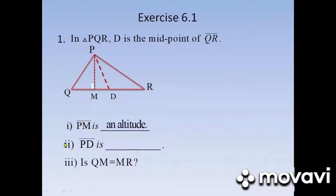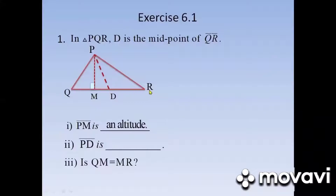Sub number two — PD is what? PD is a line which is drawn from the vertex meeting the midpoint of the opposite side QR, such that QD is equal to DR. So PD is a median.